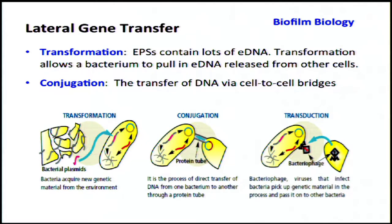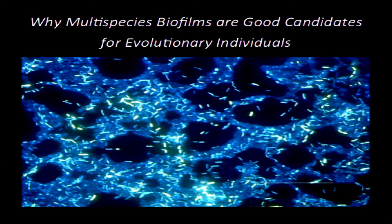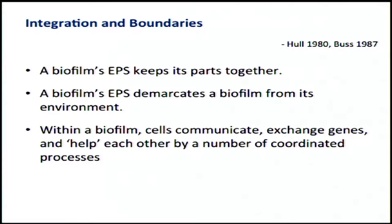So that's the stage-setting biofilm biology. Now the case for why these are arguably evolutionary individuals — why they function as things that might be targets of selection. I'll introduce some criteria, with names of people who've mentioned them, and talk about how biofilms satisfy each. Integration and boundaries is often cited for evolutionary individuals. EPS in biofilms does that very well, holding parts together and demarcating the biofilm from its environment — it's a barrier to predators and antibiotics, and there's a distinction between lateral gene transfer rates within versus outside the biofilm.